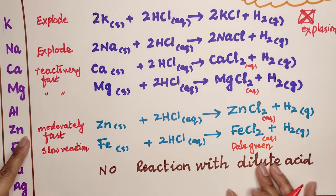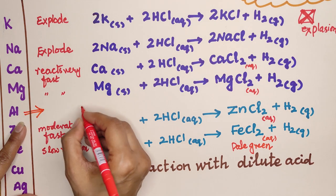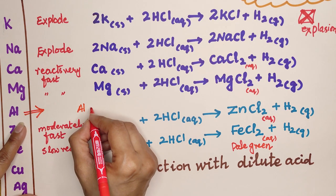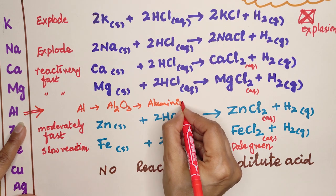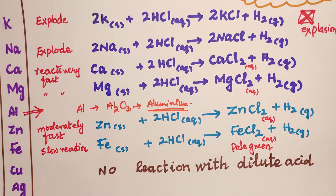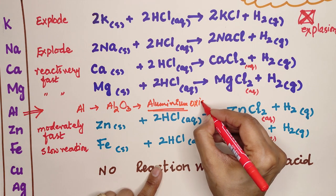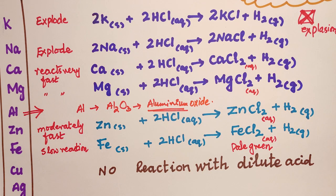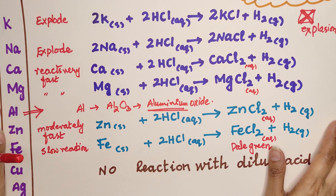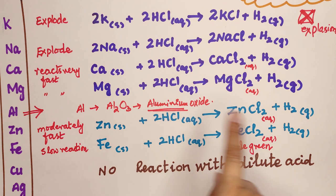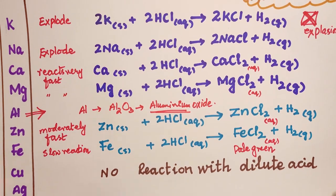Now the story of aluminium: aluminium forms a layer of Al₂O₃ (aluminium oxide) which forms a barrier around it, protecting it from rusting, from reaction with acid, and from reaction with water. To test aluminium's reactivity, we must first remove this protective oxide layer that forms when aluminium reacts with oxygen in the atmosphere.